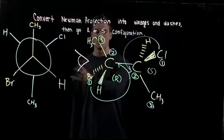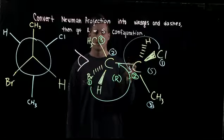And that's how you convert the Newman to a wedge and dash. And then from there, that's how you R and S.